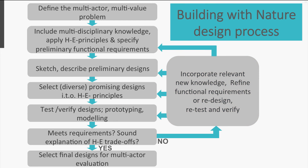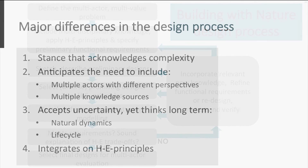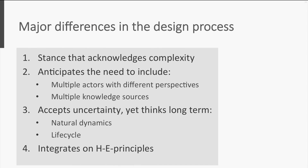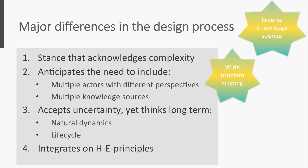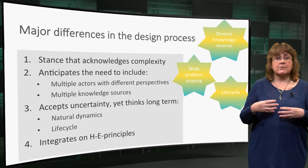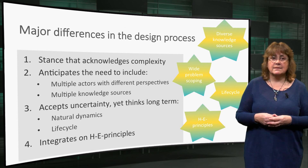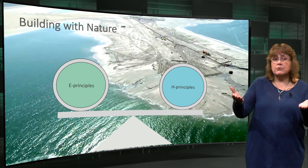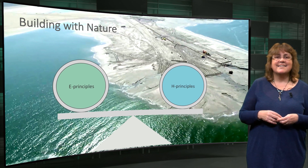So the Building with Nature design process can be depicted like this. The major differences in the two design processes are: first, that in Building with Nature we adopt a stance that acknowledges complexity. We anticipate the need to include many actors or stakeholders with different perspectives, as well as multiple knowledge sources. So we are accepting of uncertainty, recognising that natural systems are dynamic and that ecosystems can have unexpected responses. Yet we think about the long term, about natural dynamics and the life cycle of the artefact. Finally, in Building with Nature we integrate ecology and engineering using the HE principles. After all, Building with Nature is a balancing act, involving trade-offs in multi-disciplinary design space. Thank you for your attention.